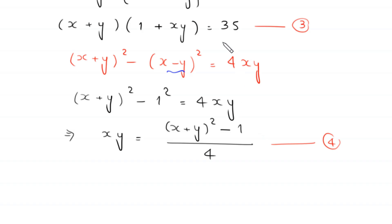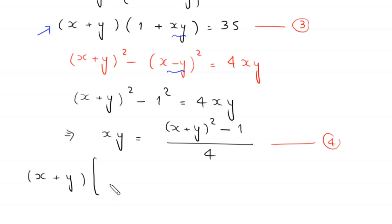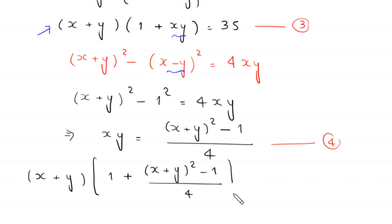Now in equation 3, we replace xy with the value from equation 4: x plus y whole squared minus 1 over 4. So equation 3 becomes x plus y times 1 plus x plus y whole squared minus 1 divided by 4, equals 35.